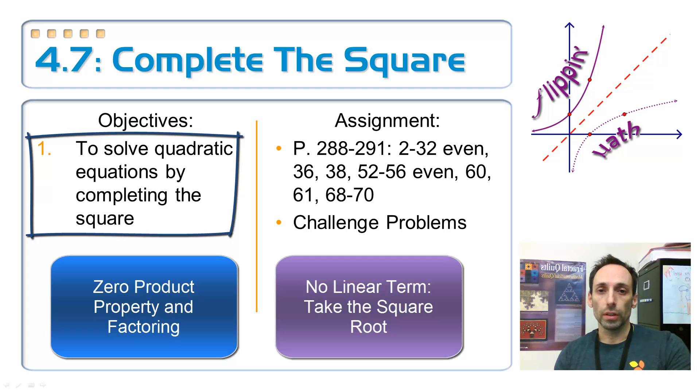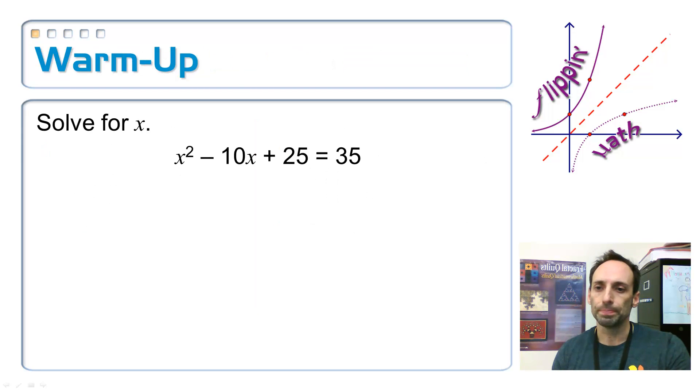Let's take a look at the first warm-up exercise. In this exercise, we're solving this quadratic equation for x. x squared minus 10x plus 25 equals 35. Ordinarily, I would subtract this 35 over here, and then I would try to factor that left side. But I'm not going to do that. Instead, I'm going to look at this left side of the equation. And notice, maybe you will notice, that this is a perfect square trinomial.